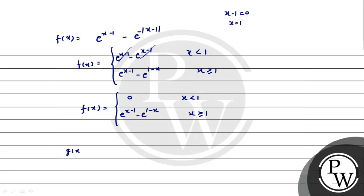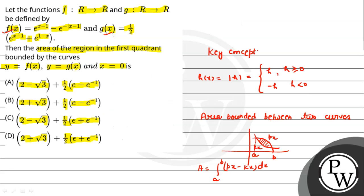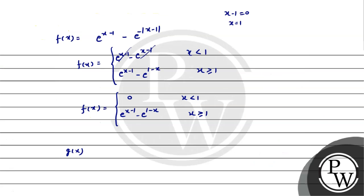And g(x) is given as g(x) = (1/2)(e^(x-1) + e^(1-x)). Now let us draw the graph. We draw the y-axis and x-axis.